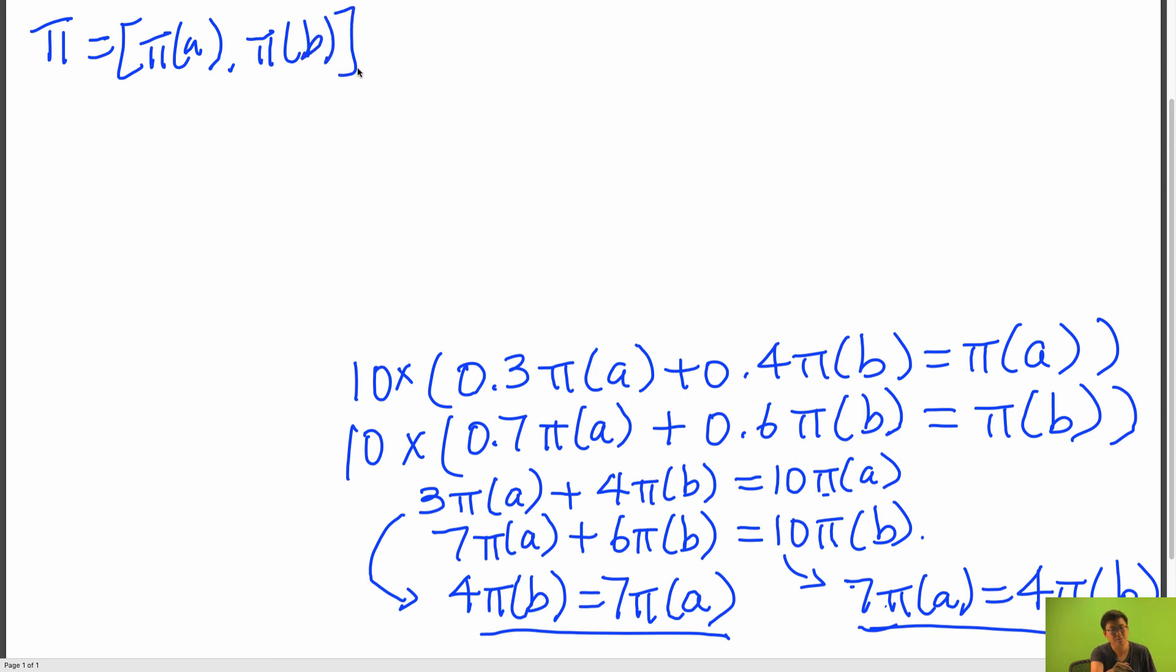Well, we know that it's a valid probability distribution, so its elements must sum to 1. And this is the equation that we can use as our second non-redundant equation.